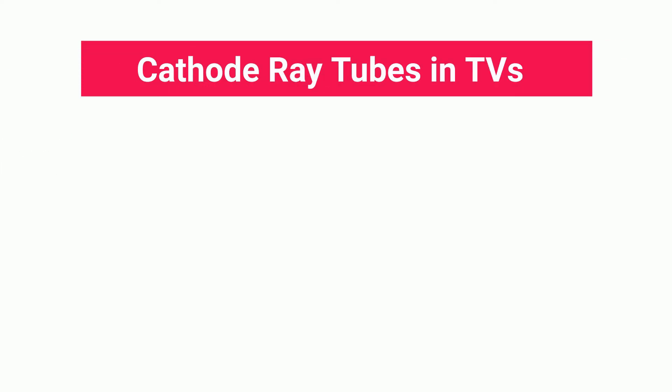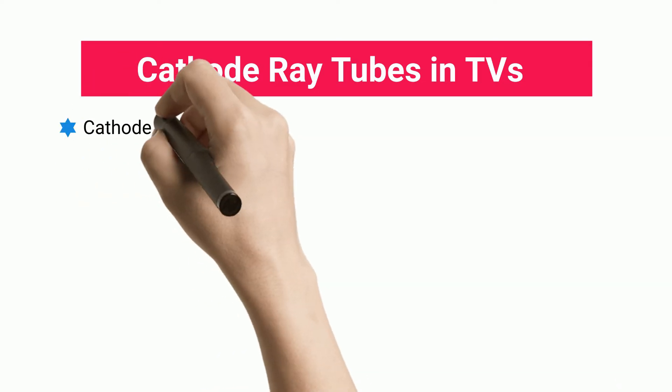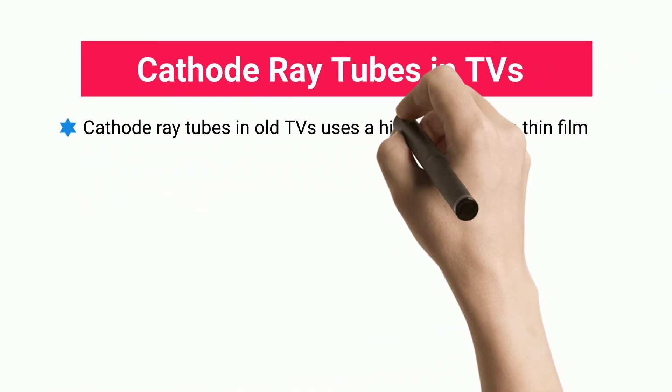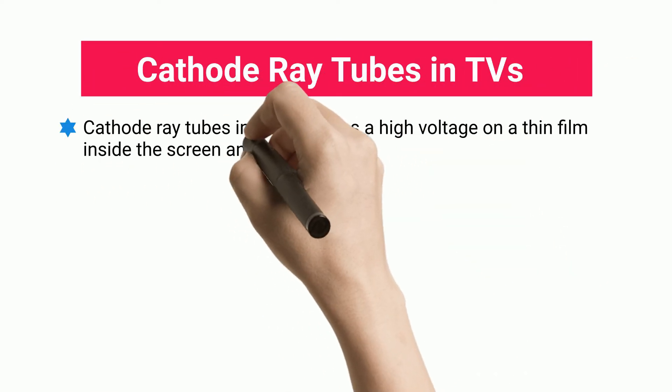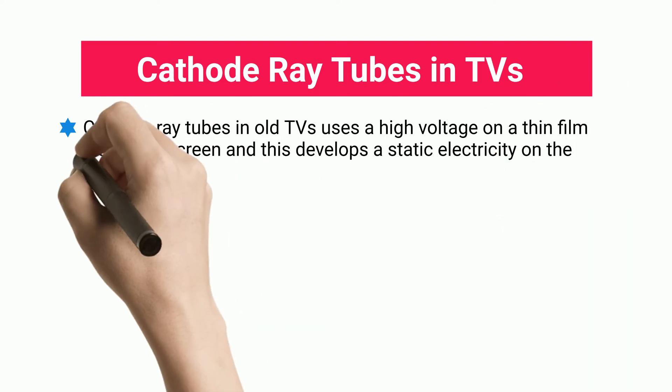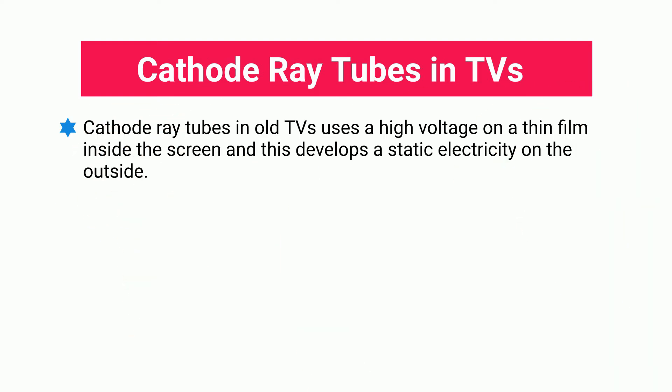Cathode ray tubes in old TVs use a high voltage on a thin film inside the screen, and this develops static electricity on the outside.